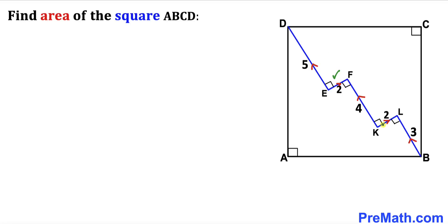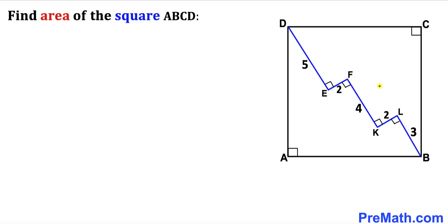Furthermore, line segment DE is 5 units, line segment FK is 4 units, and line segment LB is 3 units, whereas line segments EF and KL are 2 units each. Our task is to calculate the area of square ABCD.